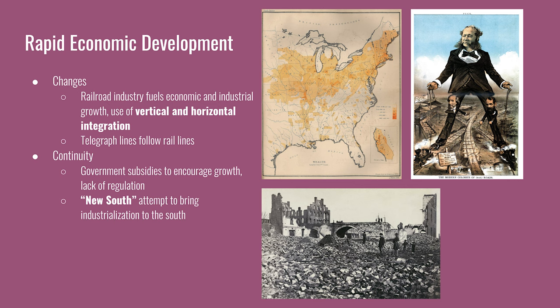Improvements in communication come with the expansion of telegraph lines. Telegraph cables are installed along rail lines and later a transatlantic telegraph line is laid, connecting North America to Europe. A continuity is that the government continues to encourage economic growth through subsidies and protective tariffs. Railroads were the main beneficiaries of land subsidies, while manufacturers benefited from higher tariffs. There is also a lack of regulation in these new industries — the government claimed to follow a laissez-faire approach whenever it was convenient for industrialists. Another continuity is that the South is lagging behind in industrialization. There are attempts and advocates for a new South, like Henry Grady, but ultimately it doesn't really happen.